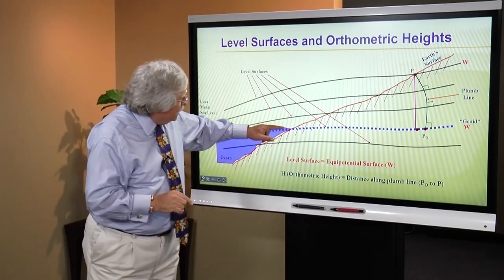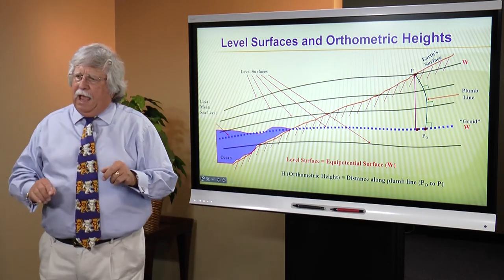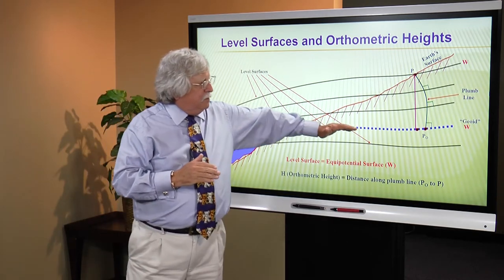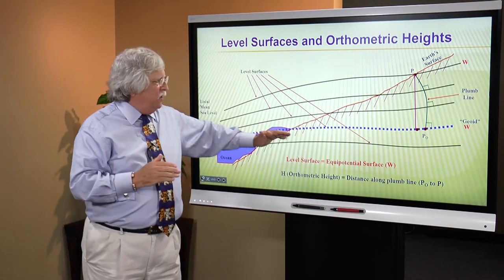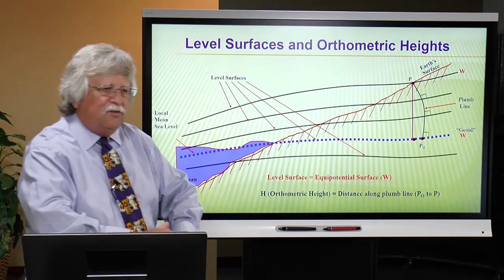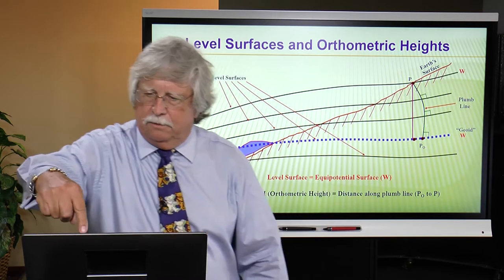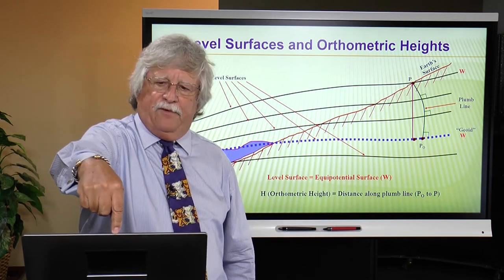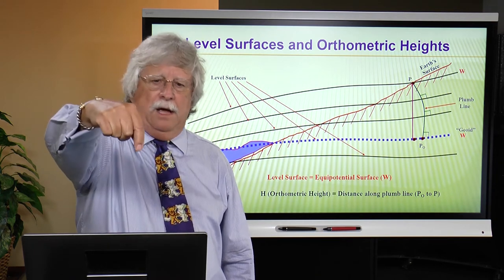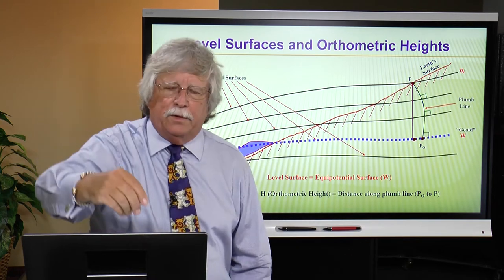NAVD88 is defined as the height of a specific benchmark at the mouth of the St. Lawrence Seaway in Canada. If we extend that surface through the continent, it moves a bit due to the changing nature of the gravity field below it. You have a multitude of equal potential surfaces — raise your finger two millimeters and you have another one, and another, and another, going up or down. In this small environment they're parallel, so you can kind of ignore that problem.